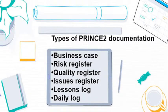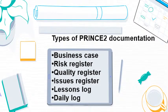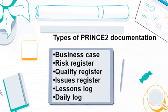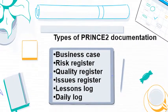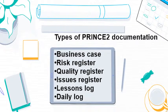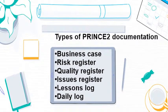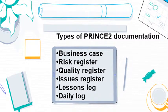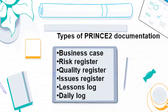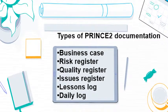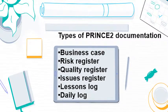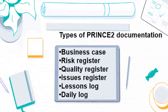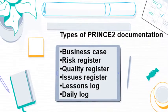Throughout the seven stages of PRINCE2, records are kept so the project stays organized and on track. These records are also used to report to the project board, check deliverables against quality requirements, and improve future work processes.